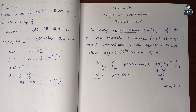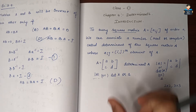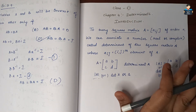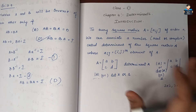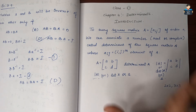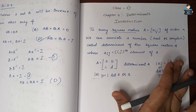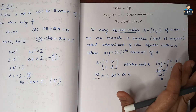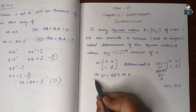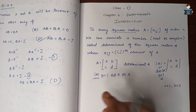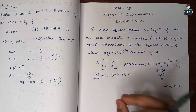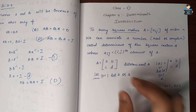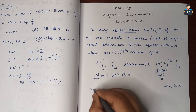Only square matrices will have determinants. This is the key point. The modulus of A should be read as determinant of A. Next, the determinant of a matrix of order 1.